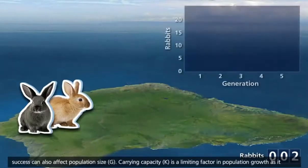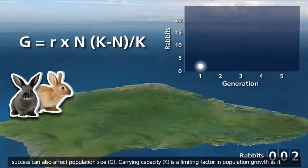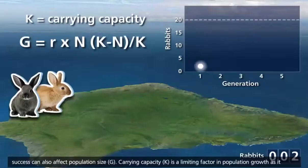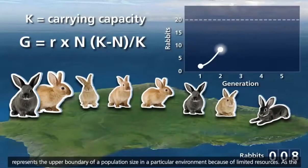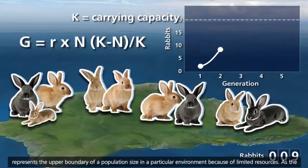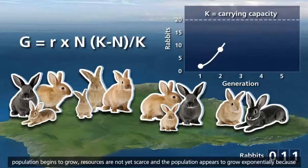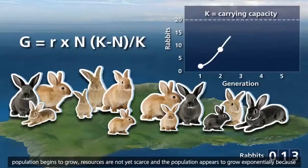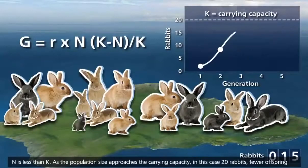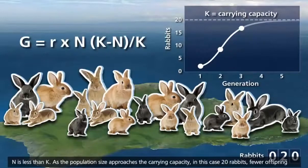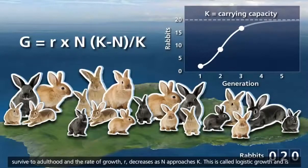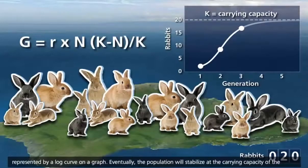Factors other than mating success can also affect population size. Carrying capacity, K, is a limiting factor in population growth, as it represents the upper boundary of a population size in a particular environment because of limited resources. As the population begins to grow, resources are not yet scarce, and the population appears to grow exponentially because n is less than K. As the population size approaches the carrying capacity — in this case 20 rabbits — fewer offspring survive to adulthood, and the rate of growth, R, decreases as n approaches K. This is called logistic growth, and is represented by a log curve on a graph.